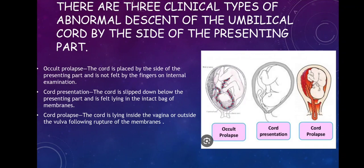Then there is Cord Presentation. This is whereby the cord has slipped down below the presenting part and is felt lying in the intact bag or amniotic sac of the membrane. As you can see on the second diagram, cord presentation — the amniotic sac is intact, however the cord is presenting before the presenting part.